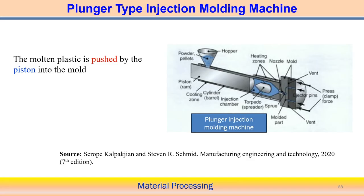Another type is the plunger type injection molding machine. From the hopper, material is collected and the plunger creates pressure on the liquid in the heating zone, pushing it out through the nozzle into the mold cavity. Ejector pins are also present; after cooling, when the ejector pins are activated, we can remove the finished component. The molten plastic is pushed by the piston into the mold cavity, which is why it is called a plunger injection molding machine.